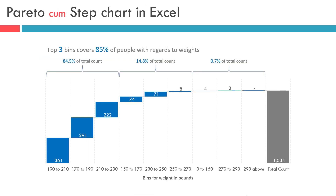Finally, this chart is very similar to the previous presentation except for a few changes. For example, instead of a cumulative percentage, we have displayed the headcount percent to the total headcount by grouping the bins at the top. We have also displayed a total column at the end, which represents the total of all the previous steps.